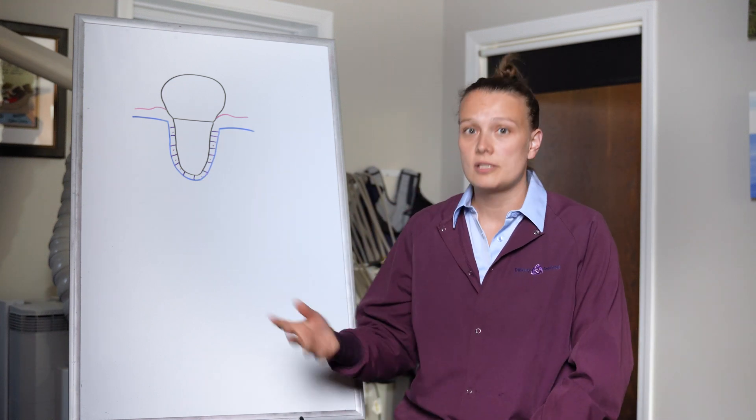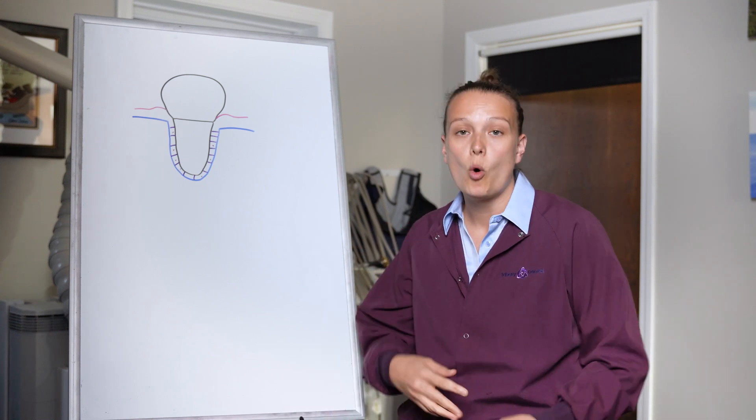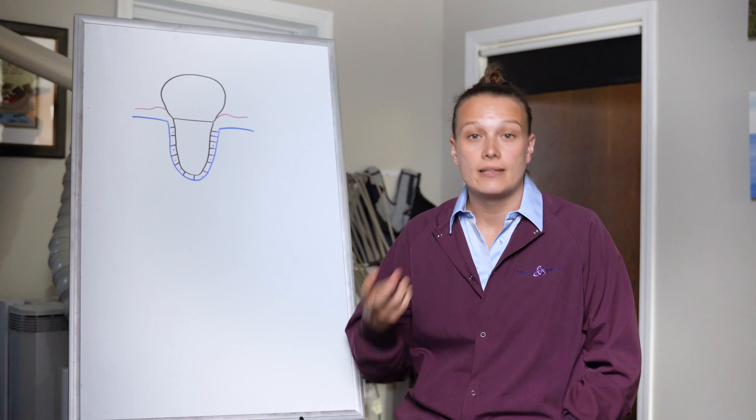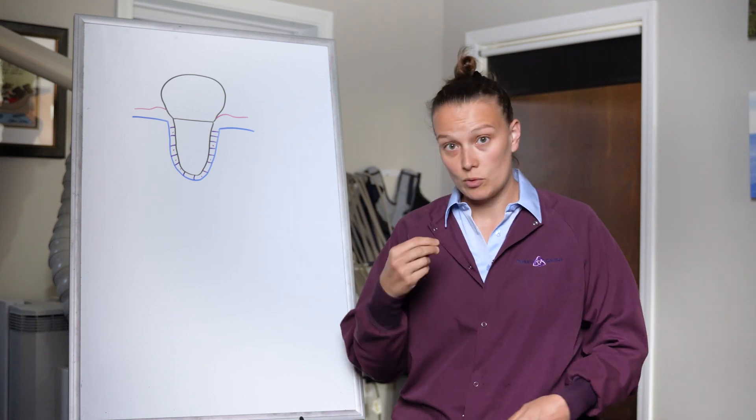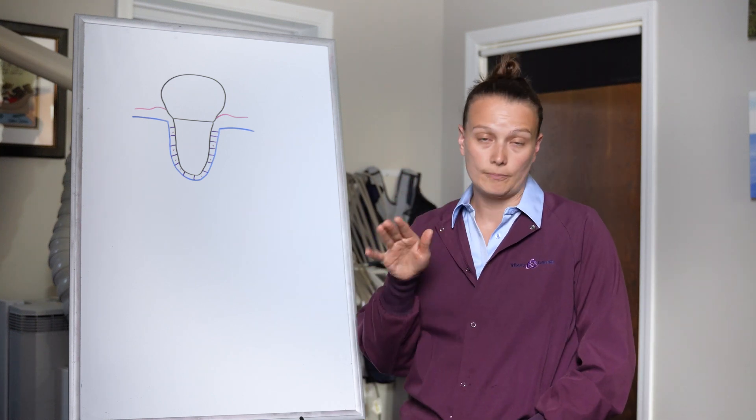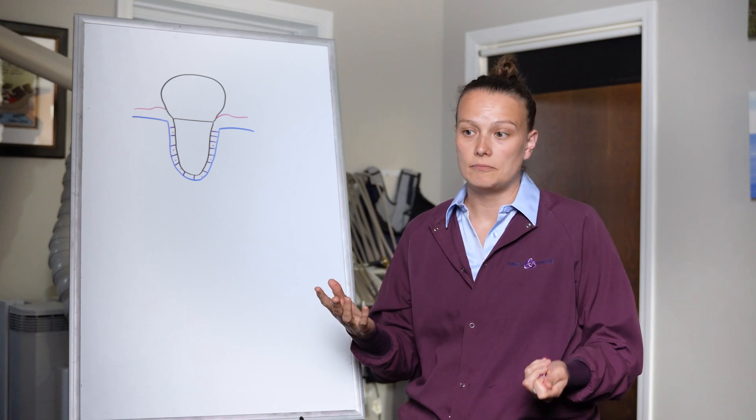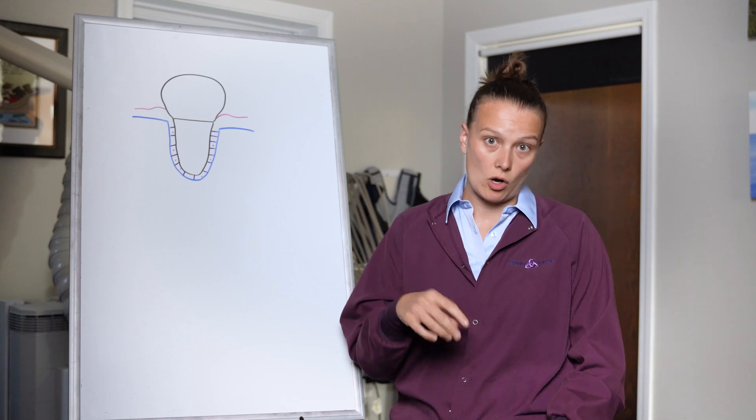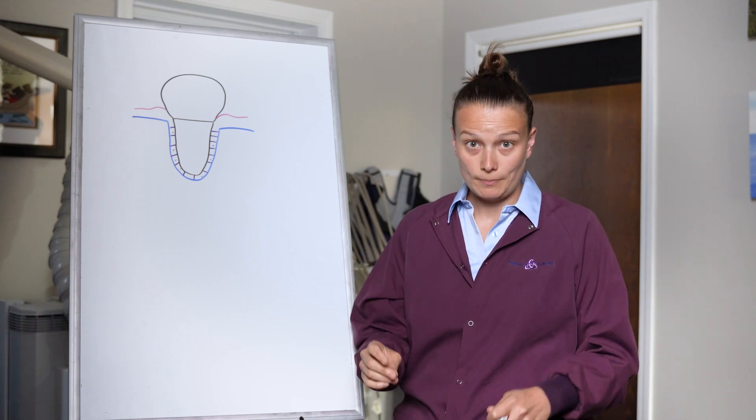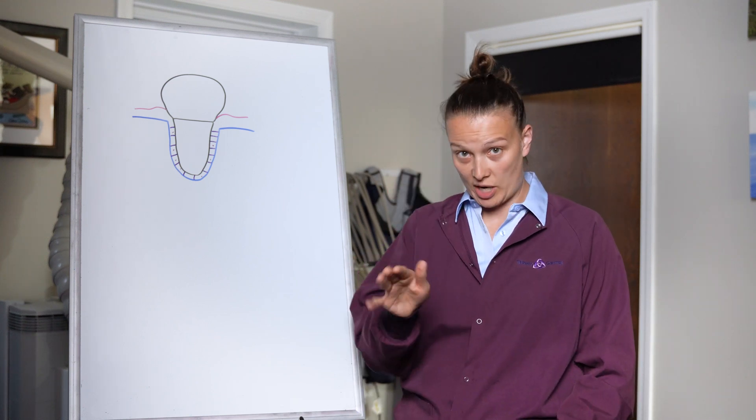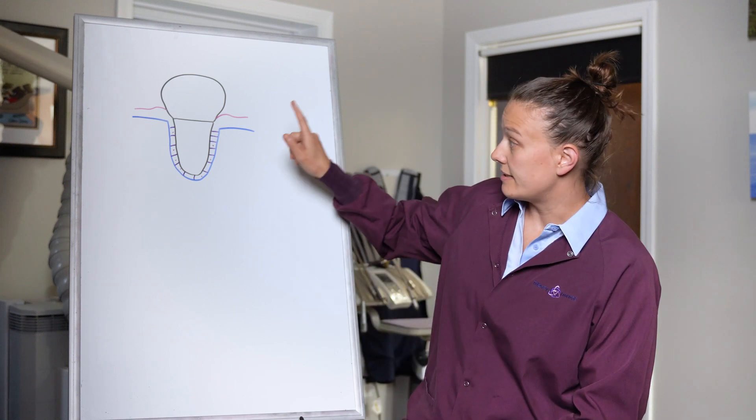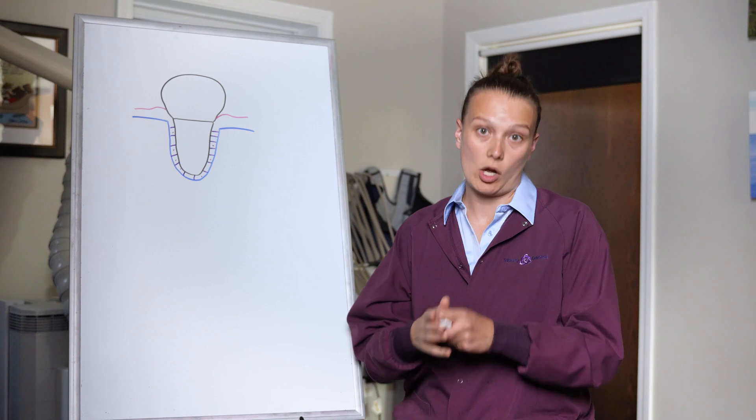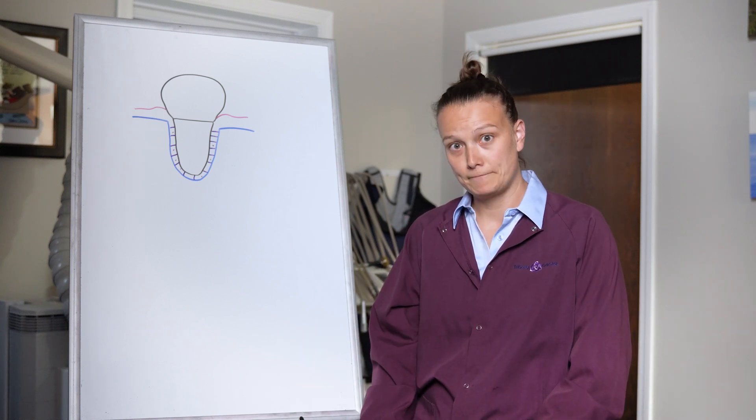The way that we do this is using a Vivos appliance. So what Vivos is, it's the use of an appliance that stimulates the stem cells. How it does it is it has these little bands on there that vibrate when you breathe, when you talk, when you move your jaw. These vibrations cause the stem cells that are around your teeth to be stimulated and cause three-dimensional growth in the area.